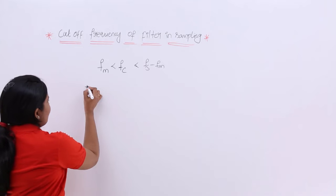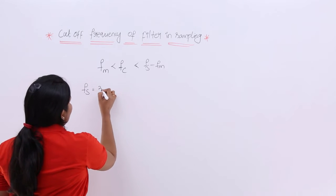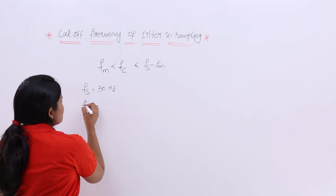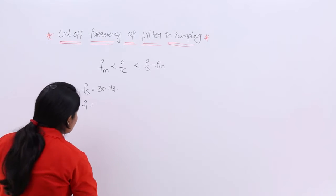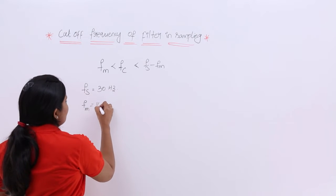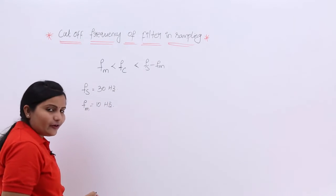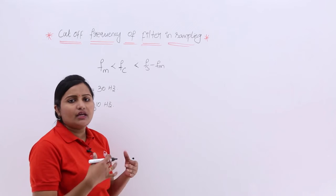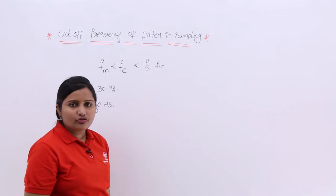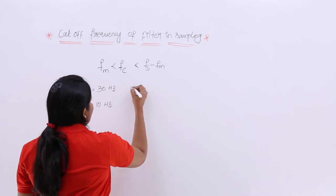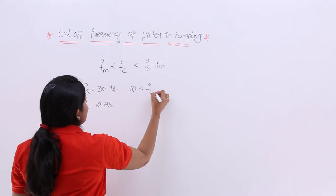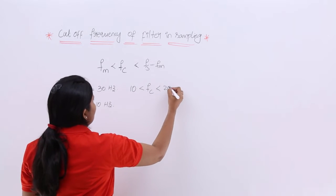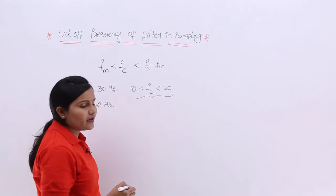For example, if FS is equal to 30 Hz and FM, the message frequency, is equal to 10 Hz, then you need to consider FC in the range: 10 < FC < FS − FM, which is 30 minus 10, equals 20 Hz. So the cutoff frequency of the filter must be in the range of 10 to 20 Hz.